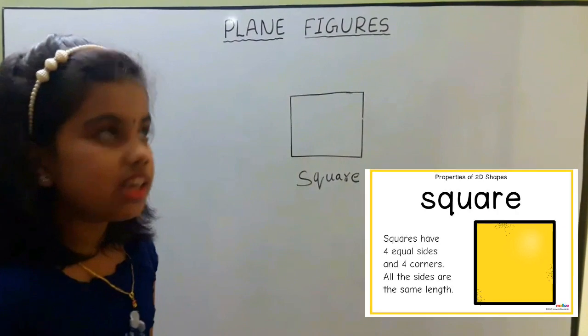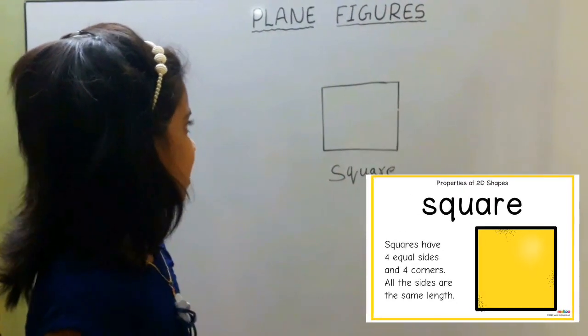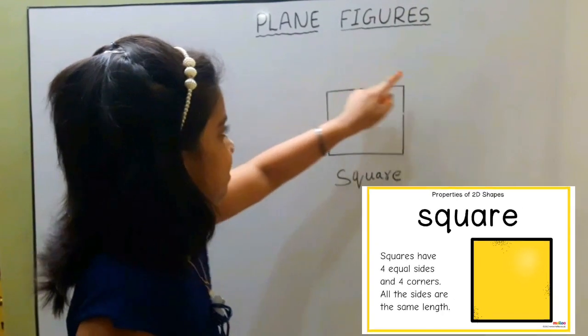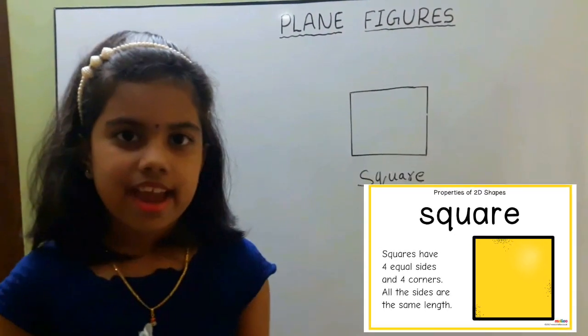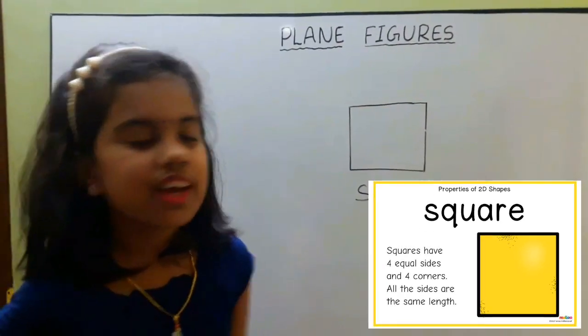Next one is square. Square has four sides in same measure and four vertices. The area enclosed inside the square is called square region.